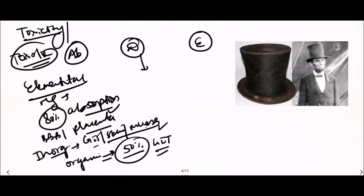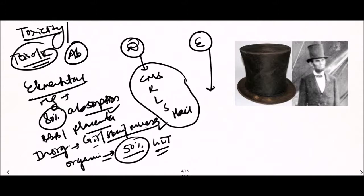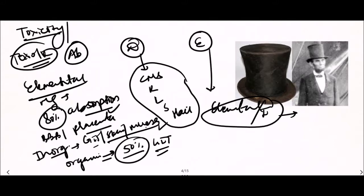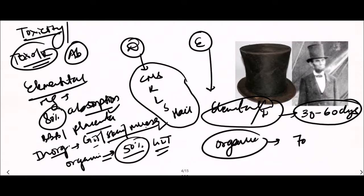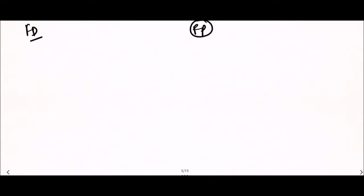Mercury compounds are widely distributed in the central nervous system, liver, spleen, and some compounds are distributed in hair also. Elemental and inorganic mercury compounds are completely eliminated within 30 to 60 days, while organic mercury compounds take about 70 days to eliminate completely from the body.